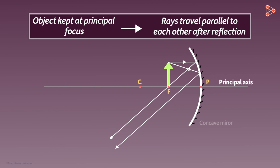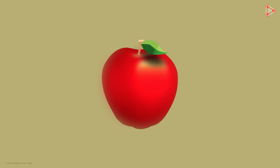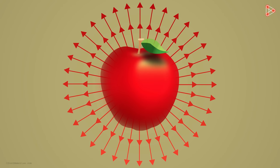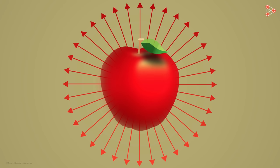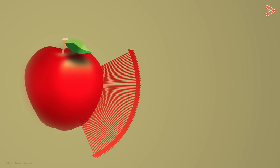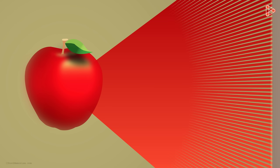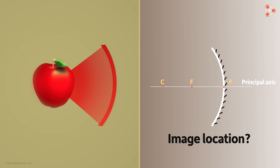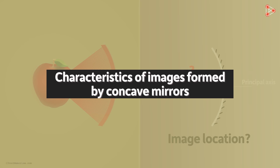Before ending this video, one important point: in reality, every object emits rays of light in all possible directions — from any point on an object, infinitely many rays of light travel in all possible directions. So where will the image of the object be formed? Is it formed at the principal focus again? In the coming videos, we will learn the characteristics of images formed by concave mirrors.